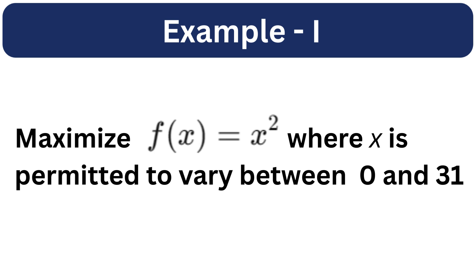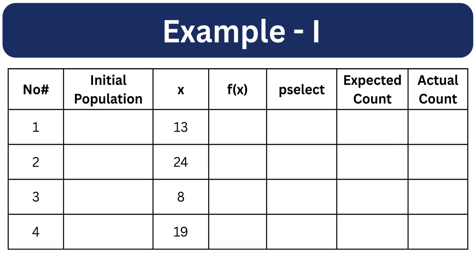In this example, we have to maximize the function f equals to x square where the variable x ranges from 0 to 31. Here is the randomly generated initial population. Since 31 is 5 bits in binary, each individual in the population can be represented as a 5-bit binary string.